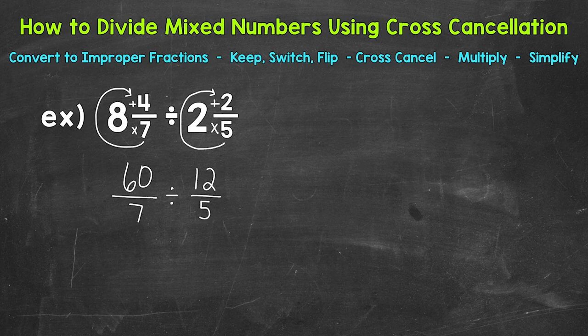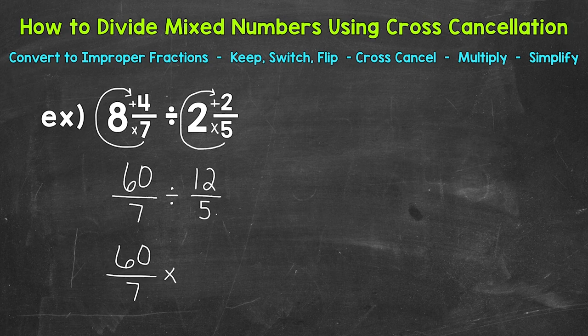Let's go through our steps — keep, switch, flip. We always keep the first fraction: 60 over 7. Then we switch or change to multiplication, and then flip our second fraction so the denominator becomes the numerator and the numerator becomes the denominator. This is called the reciprocal. So we have 5 twelfths.